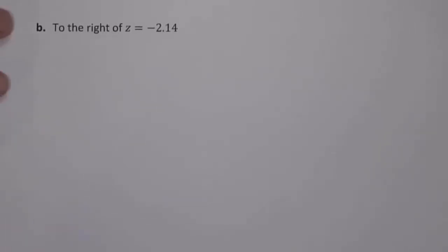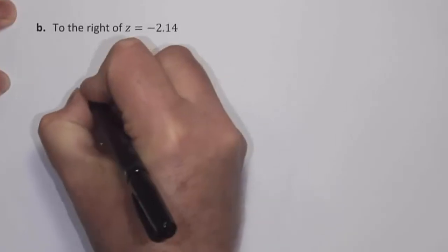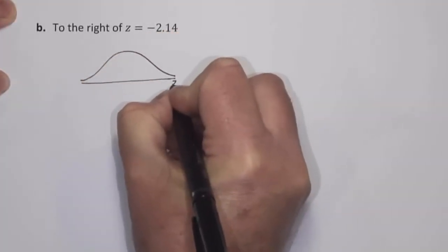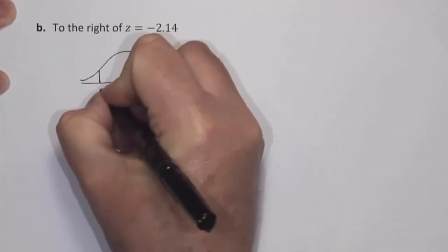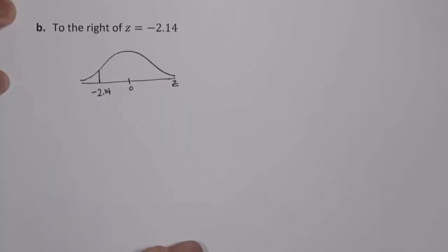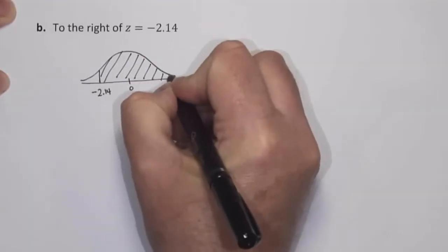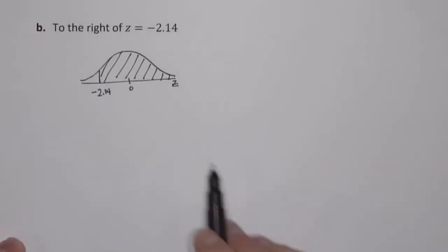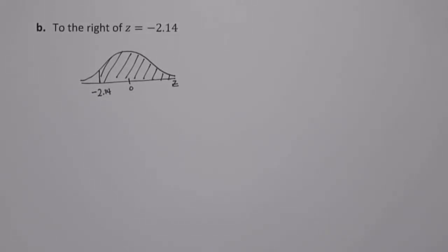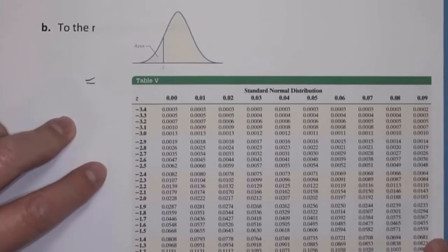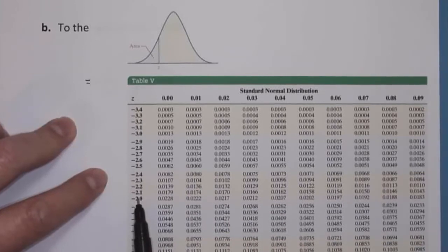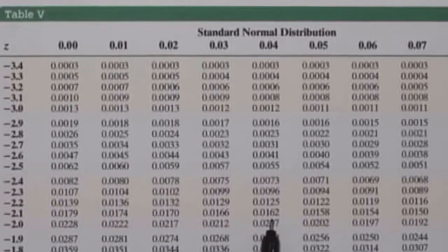Now let's look at Part B. We want to find the area under the standard normal curve to the right of negative 2.14. Drawing a sketch: here's the standard normal curve, the mean is 0 in the center, and z equals negative 2.14 is over to the left of 0. We want the area to the right of negative 2.14. I'll go to the negative page of the standard normal table and look up negative 2.14. The table gives an area of 0.0162.